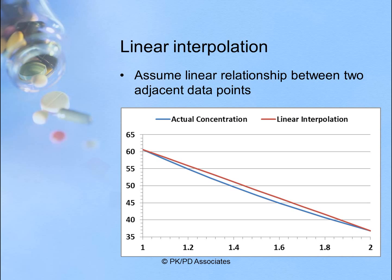Linear interpolation assumes a linear relationship between two adjacent data points. Looking at this example graph between one and two hours, as the drug concentration is falling — the blue line — it doesn't fall in a linear fashion; it falls in a log-linear fashion. Linear interpolation would be the red line. You can see that the area under the red line is slightly larger than the area under the blue line. This is an overestimation when concentrations are falling with the linear interpolation method.